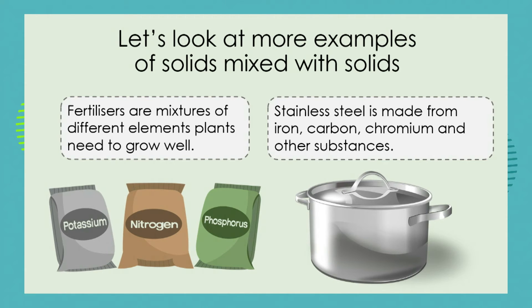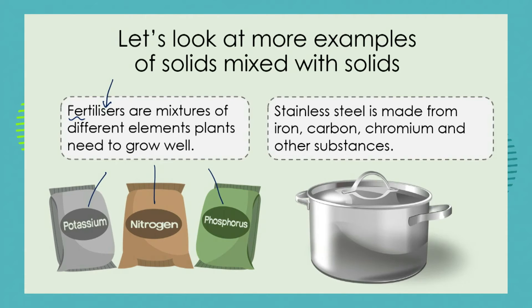Another human-made solid mixture would be a bag of plant fertilizer. We know that plants need certain elements such as potassium, nitrogen, phosphorus, and other things to grow healthily. Sometimes if we are farming, we use up all of those natural elements in the ground by planting year after year — corn or maize, for example, in the same field. So farmers will need to add fertilizers, which are solids composed of particles of the different elements that plants need in order to grow.